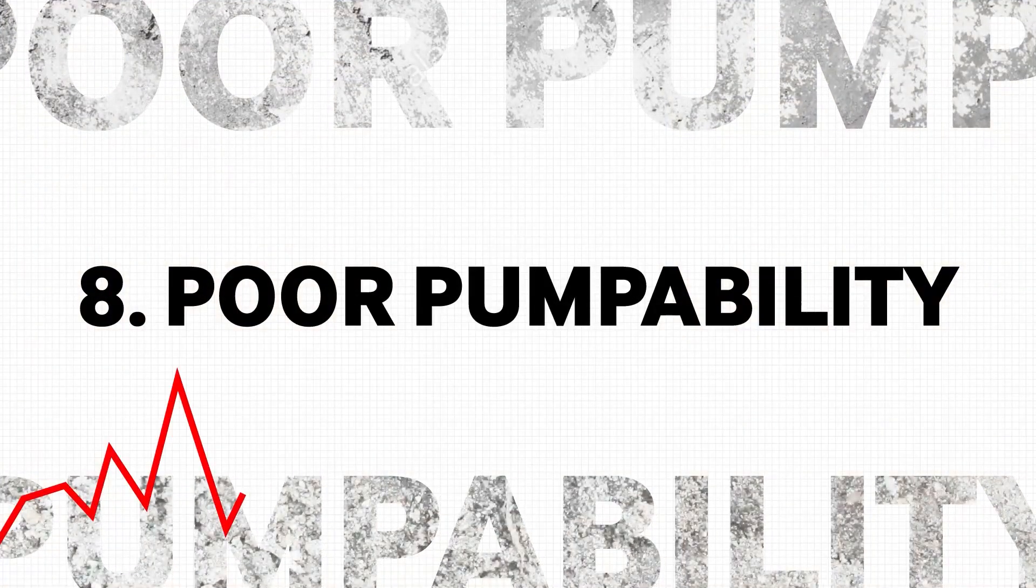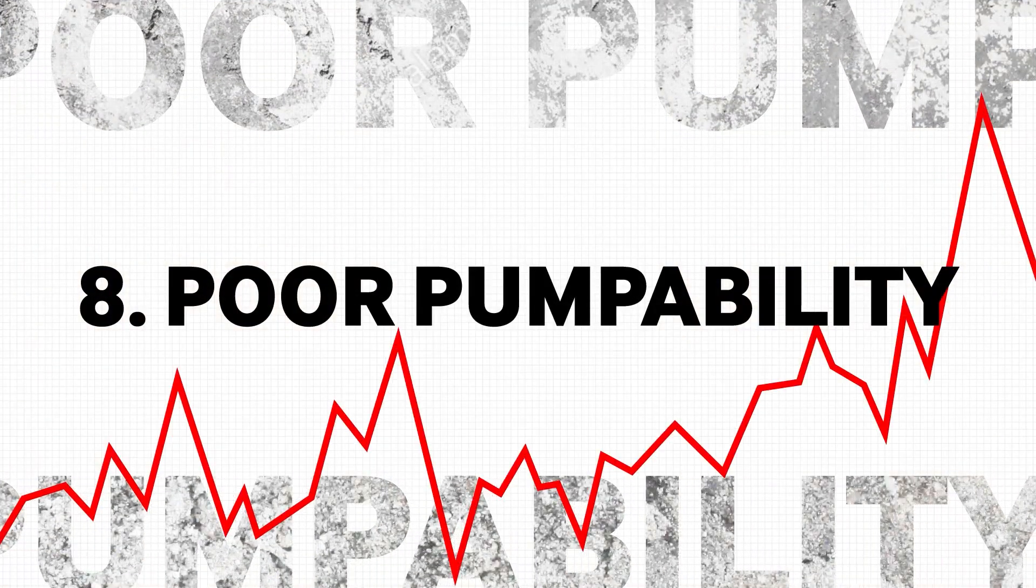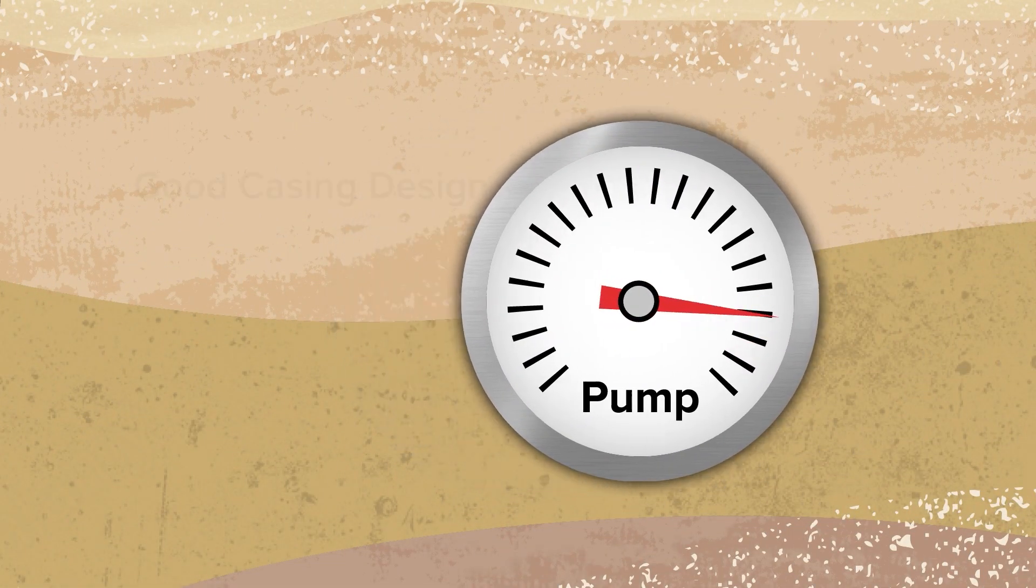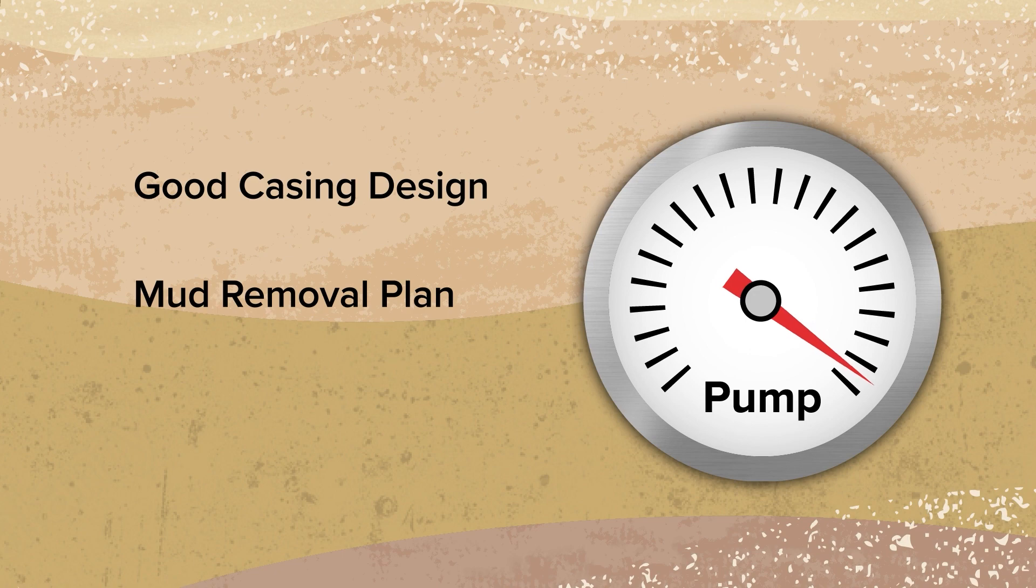Excessively high pump pressures during cementing indicates poor pumpability. To prevent this from occurring there are many things to consider such as good casing design, the mud removal plan, and a tailored slurry design.